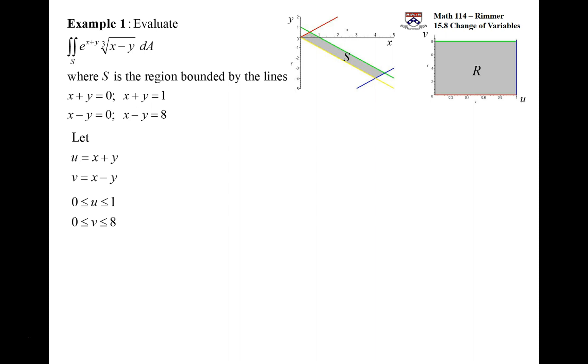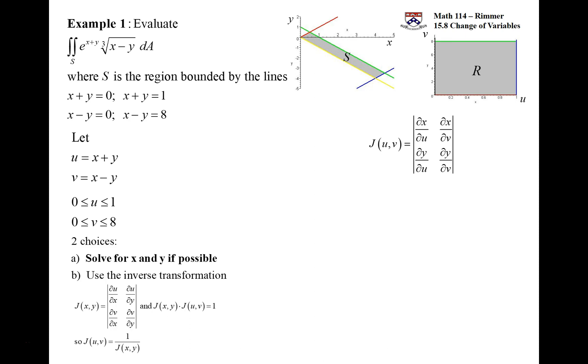The integrand is simplified. Now don't forget we have to consider the Jacobian. And so the Jacobian is the x partials with respect to u and v and the y partials with respect to u and v. We don't have that. We have u in terms of x and y. We have two options. With this everything being nice and linear like this, we can solve for x in terms of u and v. We can solve for x and y if that's possible. It's very possible here.